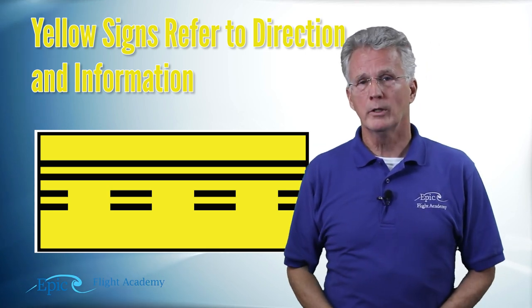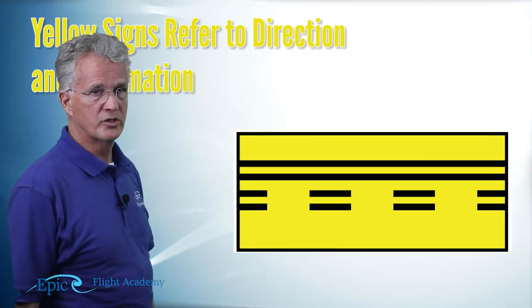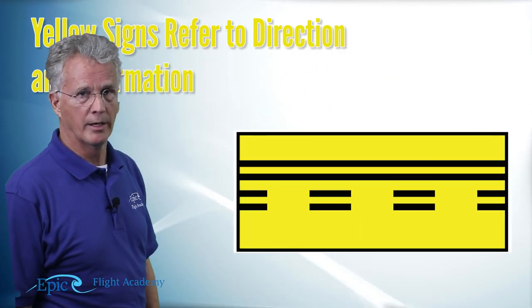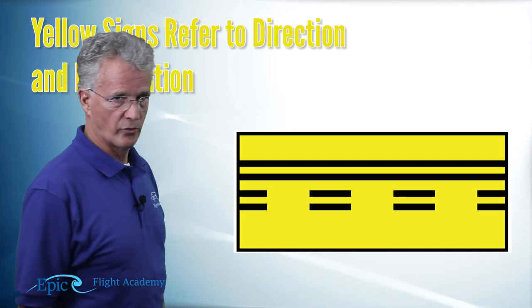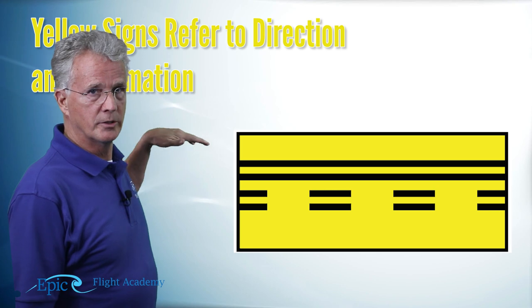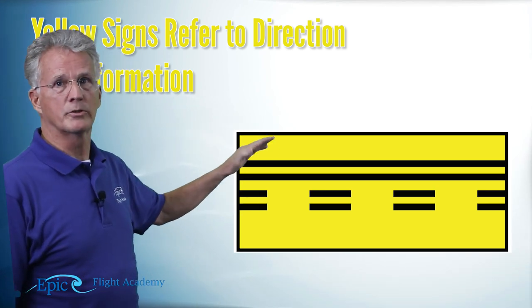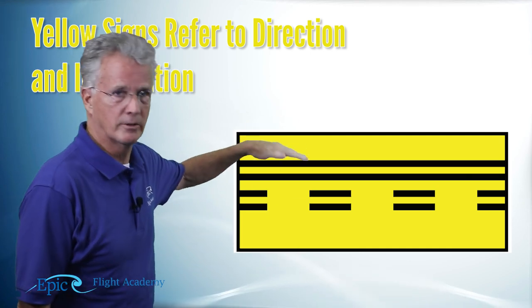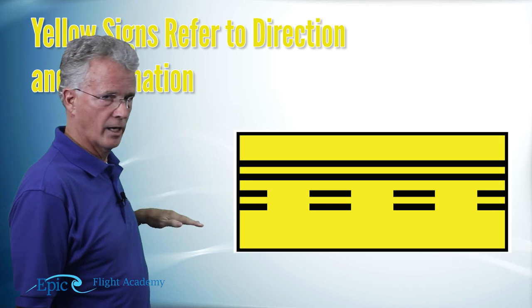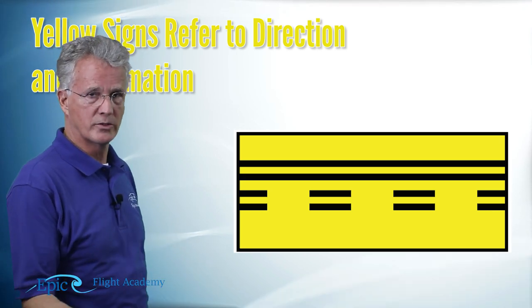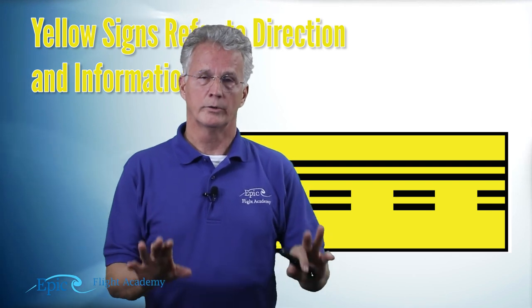What this is telling you is you're approaching a runway and you need to hold short. When you look at this sign, you might think to yourself, okay, I'm approaching the runway, but which side is the runway on? There's a lot of different ways to remember this. Here's one that works for me. Imagine the dash side of the line is the aircraft doing touch and goes. That's the active runway side.